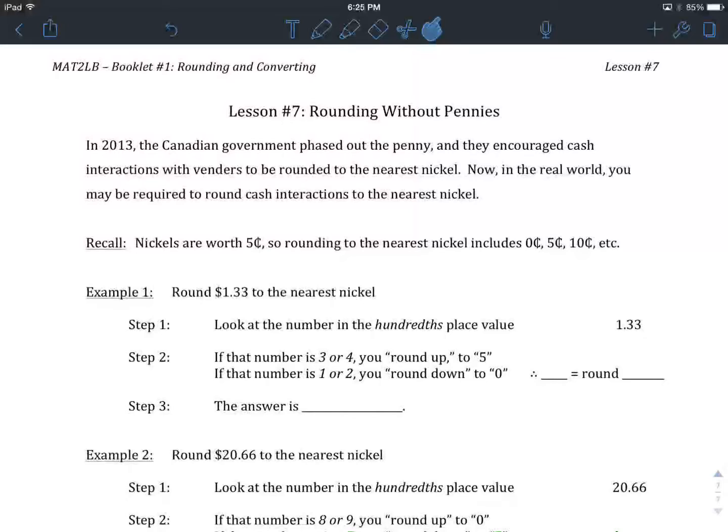So multiples of 5, because nickels are 5 cents, multiples of 5 include 5 cents, 10 cents, 15 cents, 20 cents, 25, 30, 35, going on.